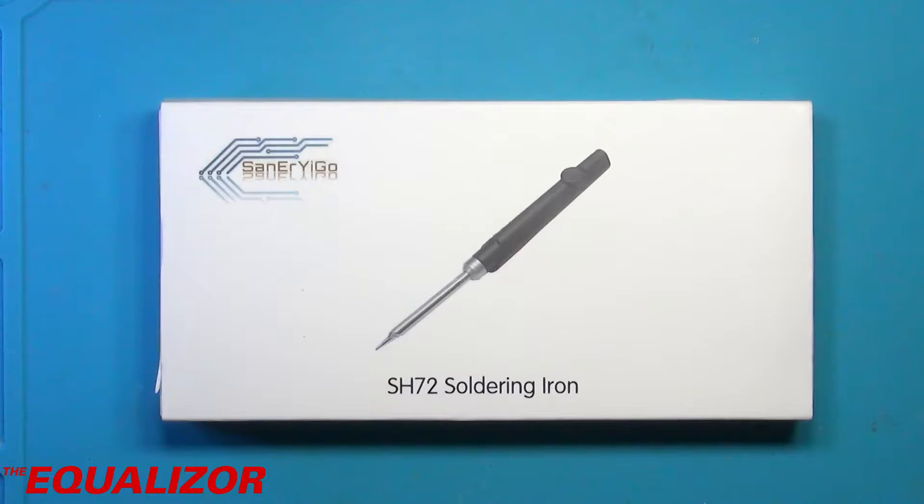Today on the Equalizer channel we're having a look at this. This is an SH-72 soldering iron from Aliexpress. This is temperature controlled and it costs less than £10 including shipping.